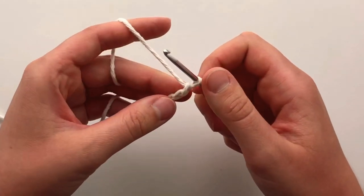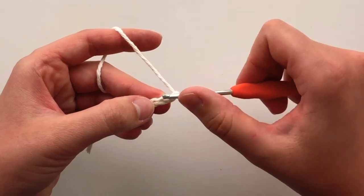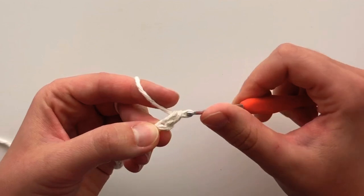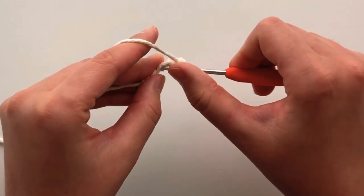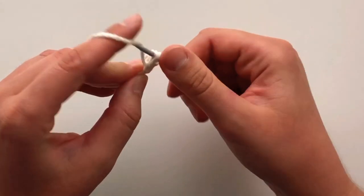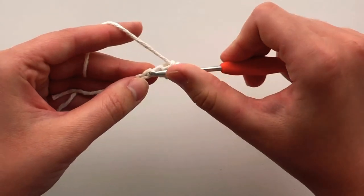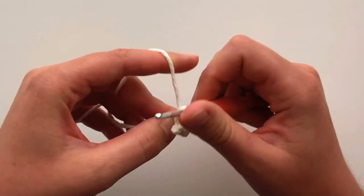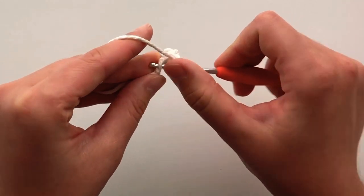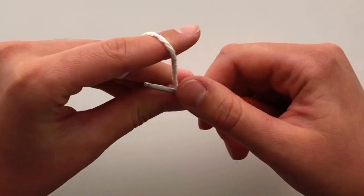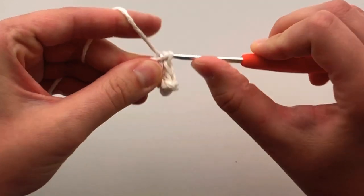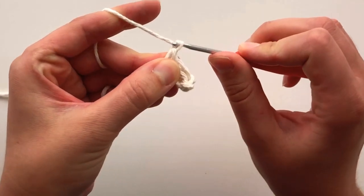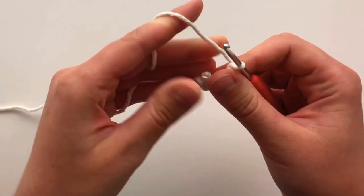Once you've made your 5 chains, do not turn. Insert your hook into the 2nd chain from your hook, and you're going to do 1 single crochet in each chain stitch for a total of 4 single crochet. Once you get to the end of your row, chain 1 and turn.